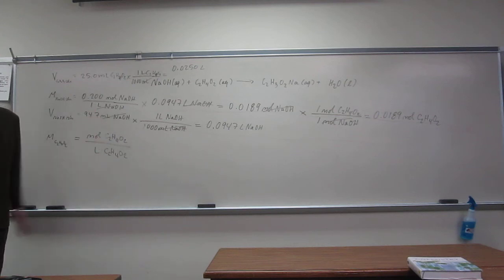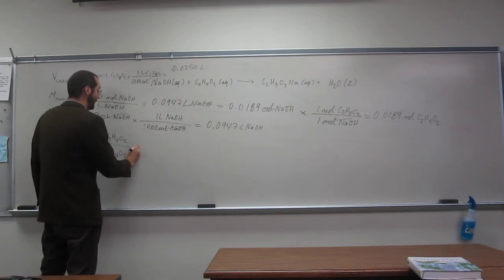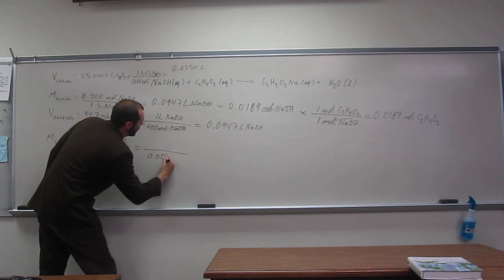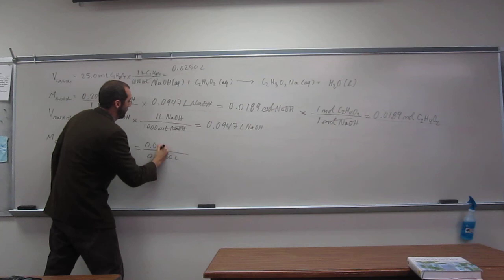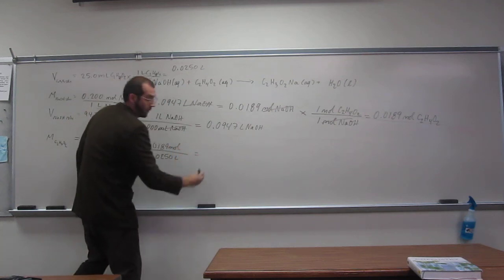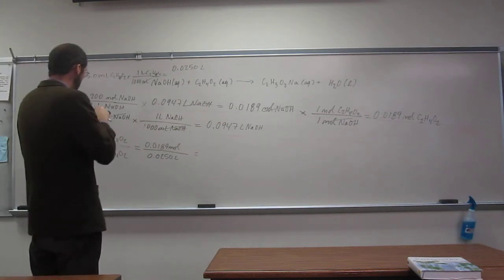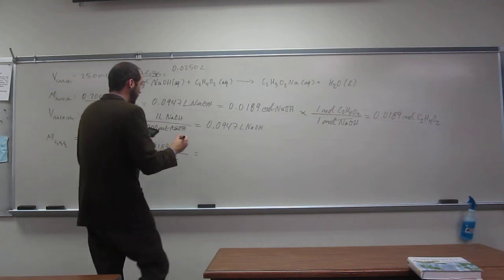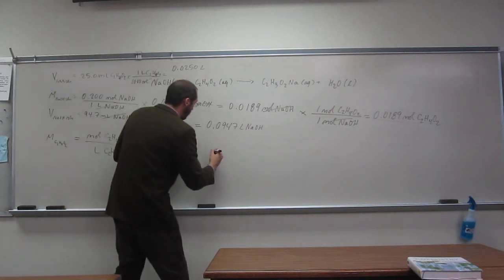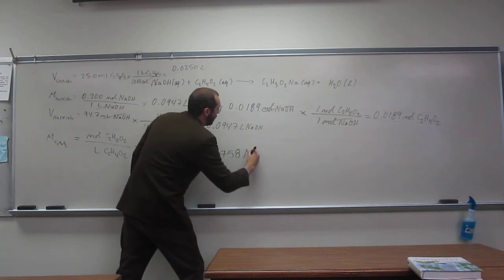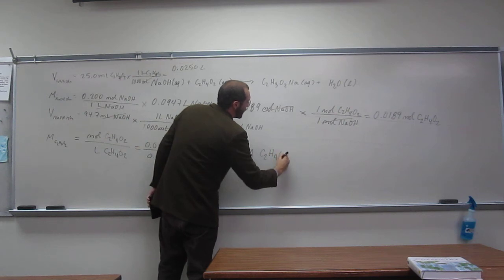Yes. Thank you. So, 0.0250 liters, 0.0189 moles. And I got two, three significant figures. 0.758 moles. So, that's going to be the molar acetic acid solution.